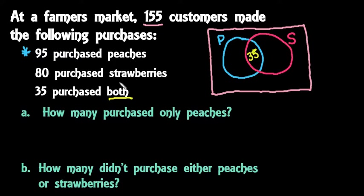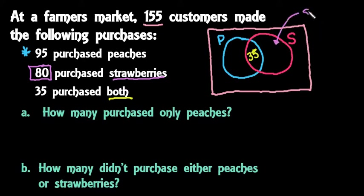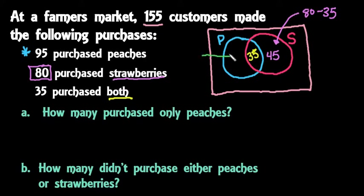Then we move into strawberries. We have 80 total who purchased strawberries, so inside the entire strawberries circle there has to be 80. The outside portion — the part not in the overlap — is found by doing 80 minus 35, which gives us 45. So 45 goes in the outer part of the strawberries circle, making a total of 80 inside that circle.